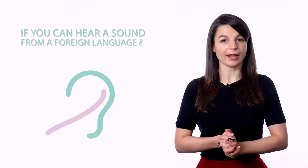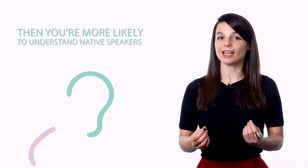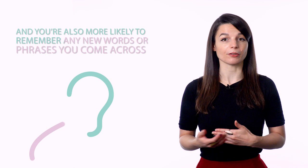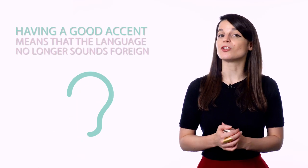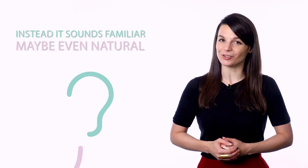Number two. Work on pronunciation. Pronunciation is often an overlooked skill when it comes to learning a foreign language. Most people think of a good foreign accent as a luxury rather than a necessity. But what most people don't talk about is how having a good accent boosts your listening and comprehension skills. If you can hear a sound from a foreign language and know how to make it yourself, then you're more likely to understand native speakers when they talk at normal speed. And you're also more likely to remember any new words or phrases you come across. Having a good accent means that the language no longer sounds foreign. Instead, it sounds familiar, maybe even natural. So how do you go about perfecting your accent? The best way is to break down the language into its individual sounds. Make note of any sounds that are the same or similar to your native language and of those that are different. Of the sounds that are different, spend your time practicing the ones that you find the hardest to say correctly.